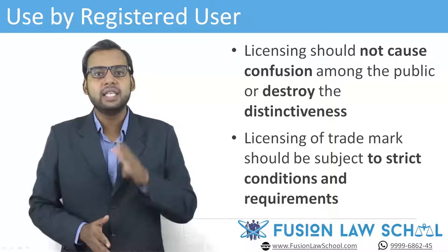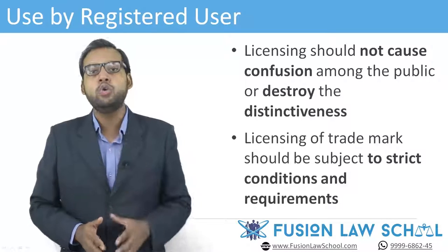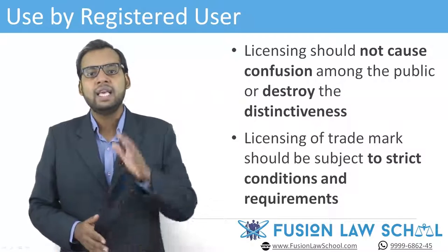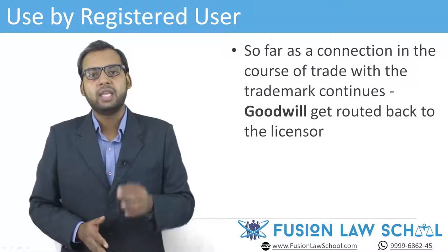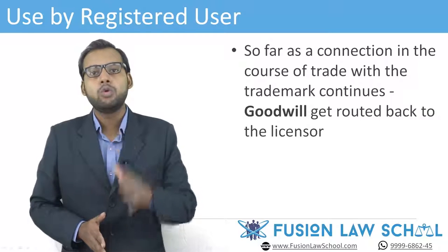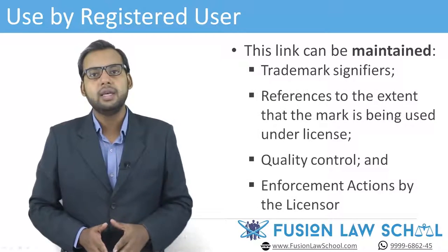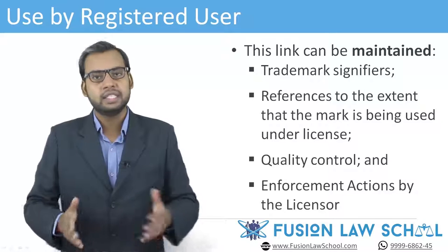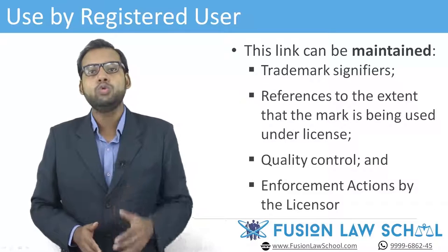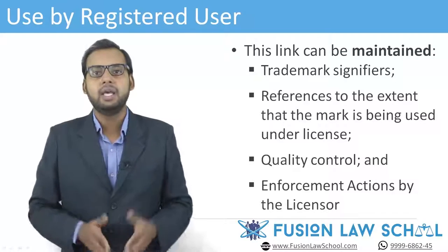In order to achieve this, licensing of a trademark by the proprietor should be subject to strict conditions and requirements to ensure that the link between the source of the trademark and the goods or services on which the trademark is being used is maintained. So far as a connection in the course of trade continues to exist between the goods and the proprietor of the mark, the goodwill arising out of such use shall get routed back to the licensor. This link can be maintained by adoption of certain measures such as appropriate trademark signifiers, references to the extent that the mark is being used under license, quality control, and by protecting the licensed trademark against third parties.